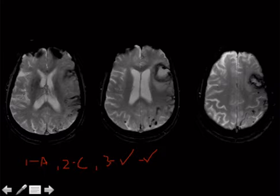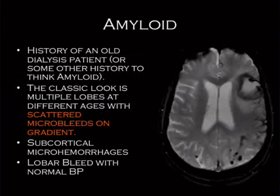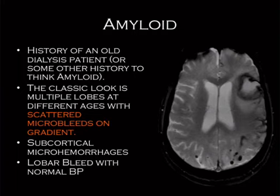This case is amyloid — it's multifocal. They would have to tell you the patient has normal blood pressure, and ideally also that they're old, have renal failure, on dialysis — the classic amyloid features. The bleeds are typically in a subcortical location. You can get a big lobar bleed with amyloid just like with hypertension, and the clinical history would need to be provided to distinguish them.